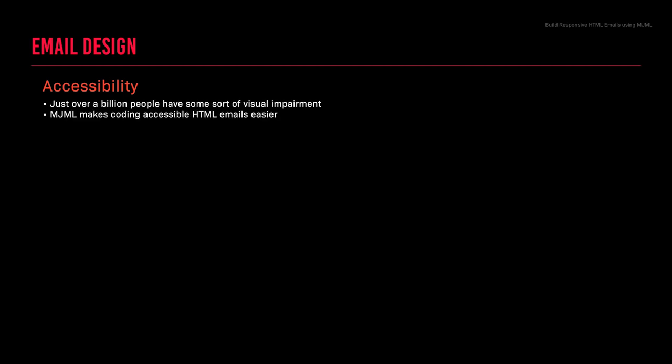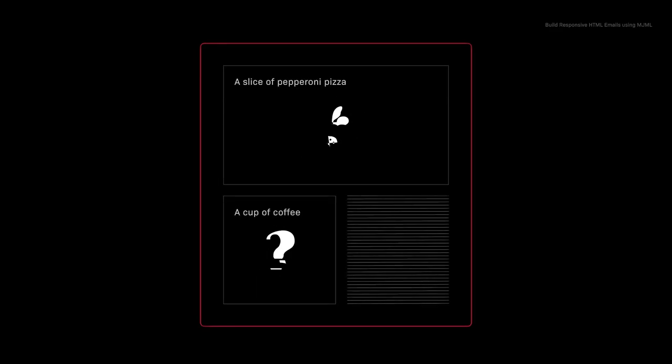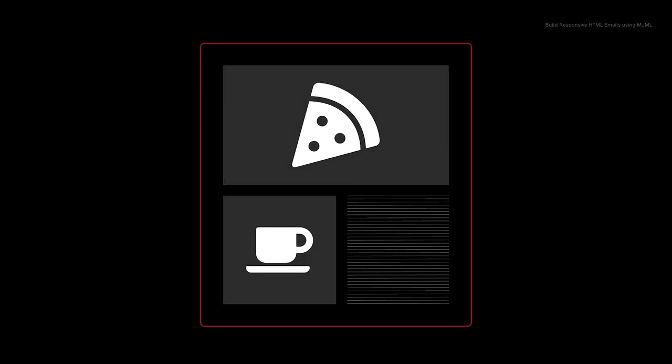Let's go over accessibility and how to make your emails more accessible. According to the World Health Organization, just over a billion people have some sort of visual impairment, and MJML makes coding an accessible HTML email a little bit easier. One thing to consider is to make link text meaningful. When using color, ensure there's enough contrast between different colors and use a tool to test color contrast. If you use images, ensure that you have alt text and that the alt text is meaningful, unless you do not need to describe the image.